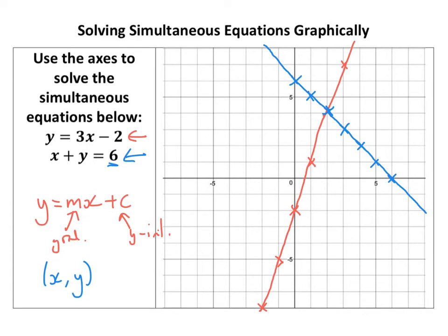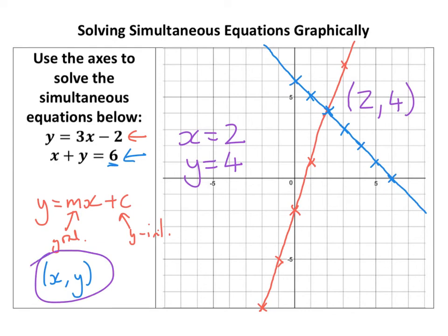The point where the lines cross is at 2, 4. Therefore, the solution to these simultaneous equations — and you'd need to write this — is x equals 2, y equals 4. That's from where the x-coordinate is 2 and the y-coordinate is 4. You can check them by putting those values into one of these equations, or both.